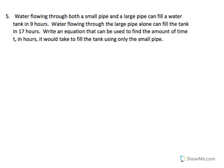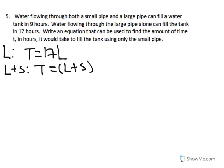So we see that for the large pipe, one tank equals 17 hours using the large pipe. And the combination of the large and the small, one tank to be filled with the large pipe plus the small pipe is nine hours. So then we can use this to solve for L. So then t over 17 is equal to L.